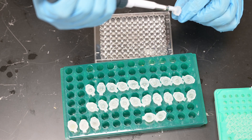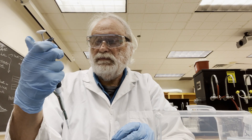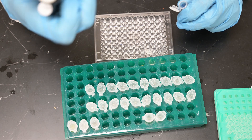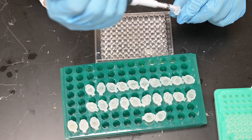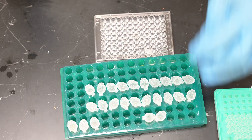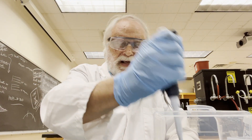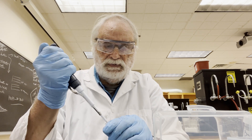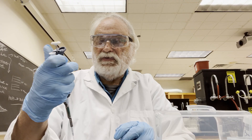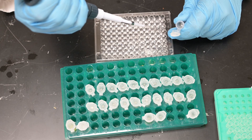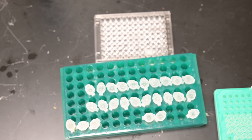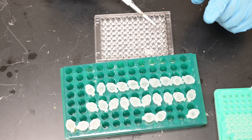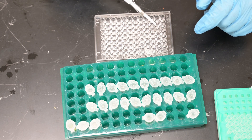I'll load 20 microliters of lysate in F1, 10 microliters in F2, and 5 microliters in F3. I'll put that back and get rid of the tip. Next, I'll add 10 microliters of buffer to F2 and 15 microliters to F3. Now we've done the same dilutions of the lysate: the undiluted, the 50% diluted, and the 25%.